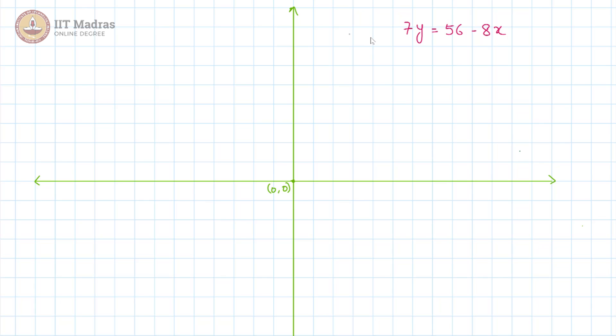And the easiest way to find out these two points is to work with the intercepts, that is when this line cuts the x axis and when it cuts the y axis.